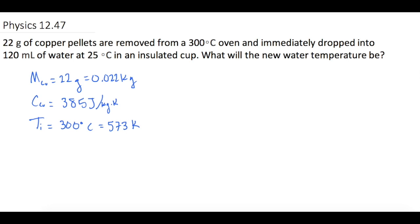Okay, I think that's it for the copper, so let's do the water real quick. They tell us the mass of the water, or they only tell us the volume 120 milliliters, but we know that one milliliter is essentially equal to one gram, so we have 120 grams of water in this case, which is 0.12 kilograms.